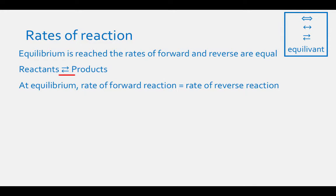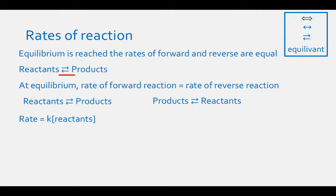At equilibrium, the double-sided arrows mean that the rate of the forward reaction, where reactants become products, equals the rate of the reverse reaction, where products become reactants. Rate equals a constant times the concentration of the reactant. So this means that the forward rate constant times the concentration of the reactants equals the reverse rate constant times the concentration of the products.